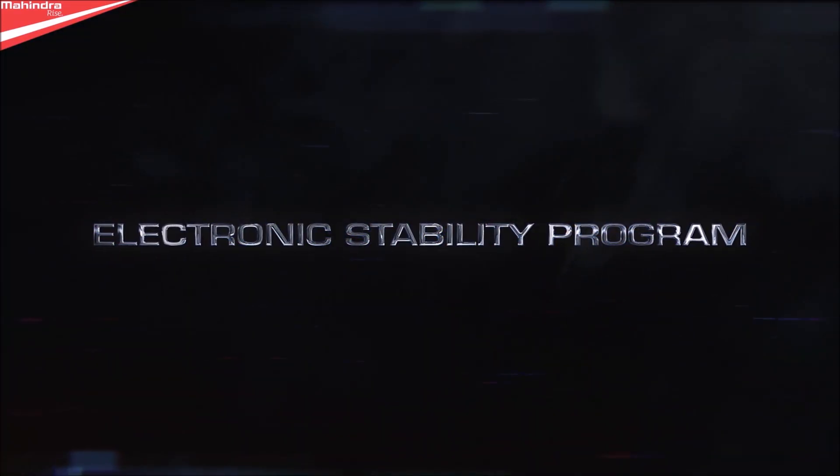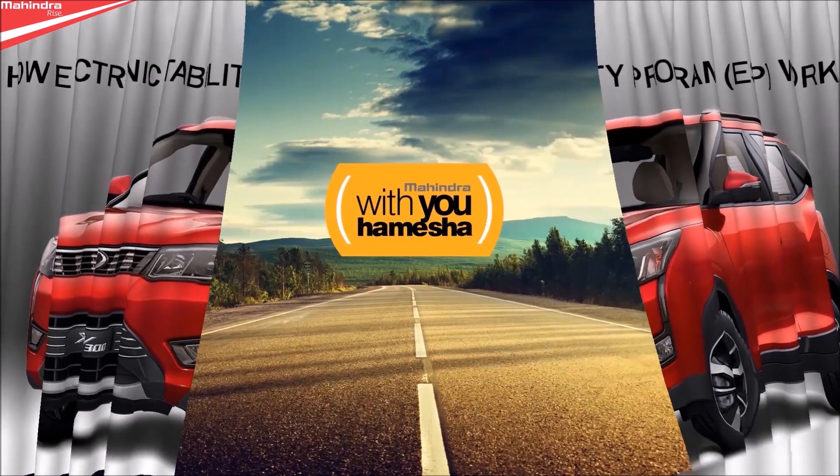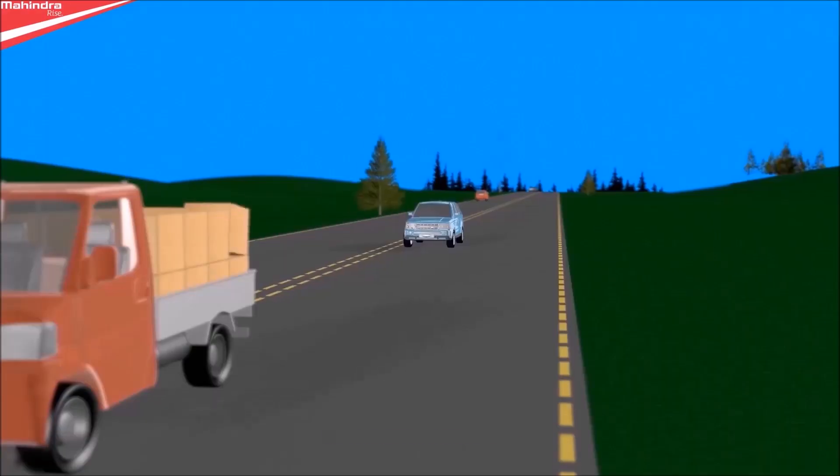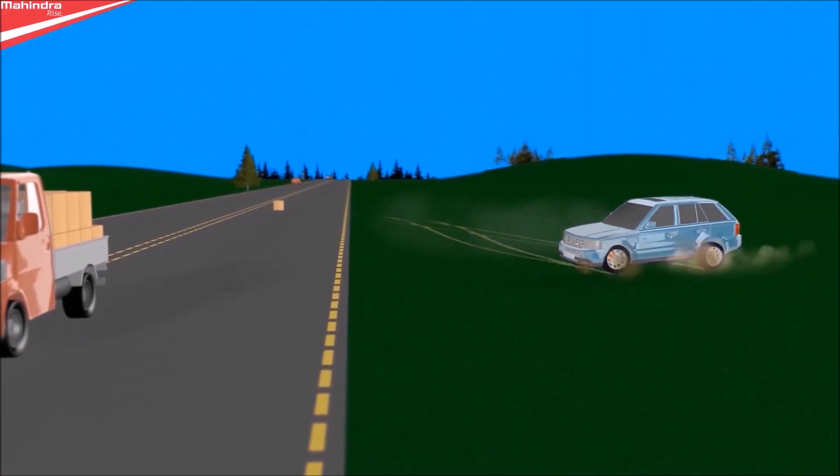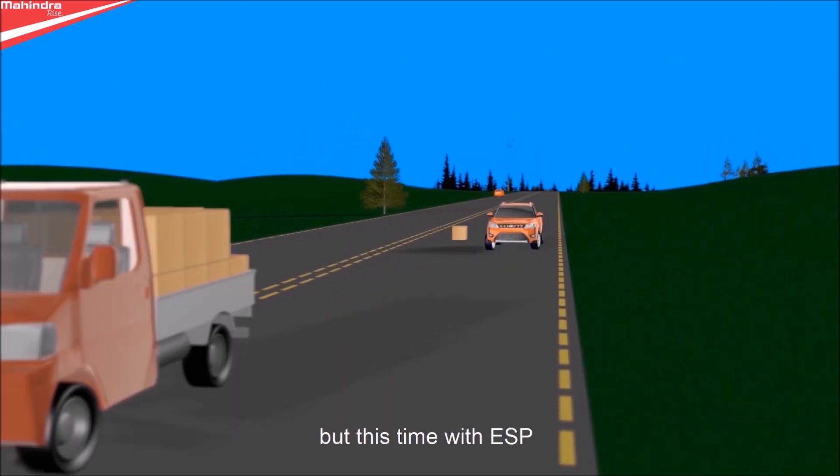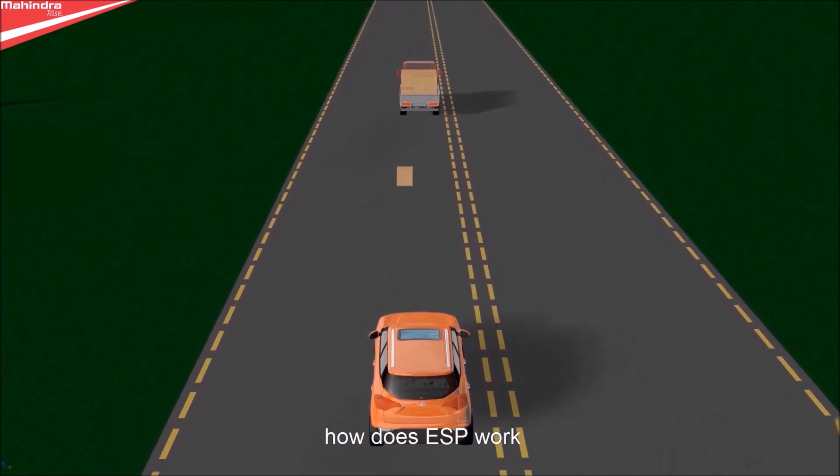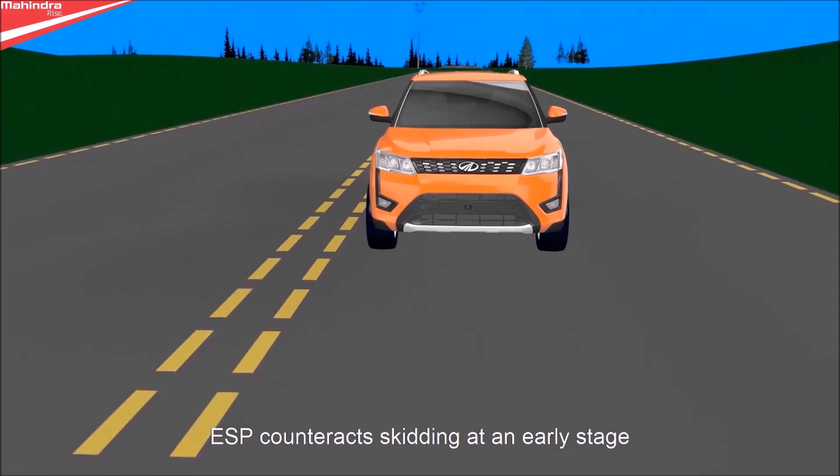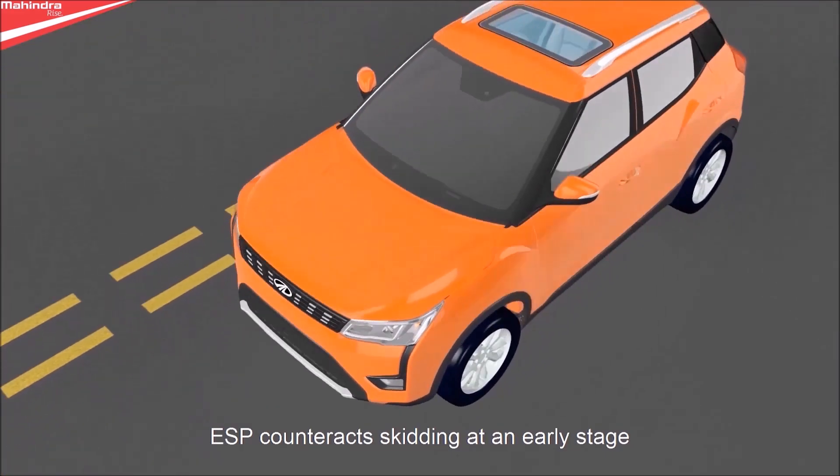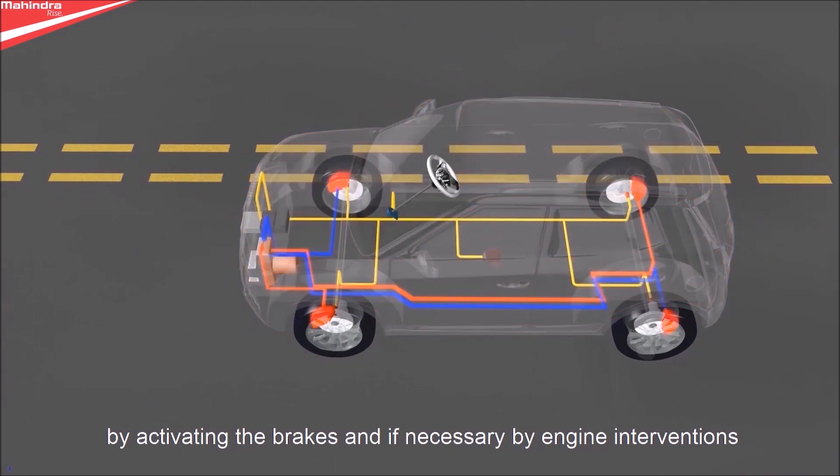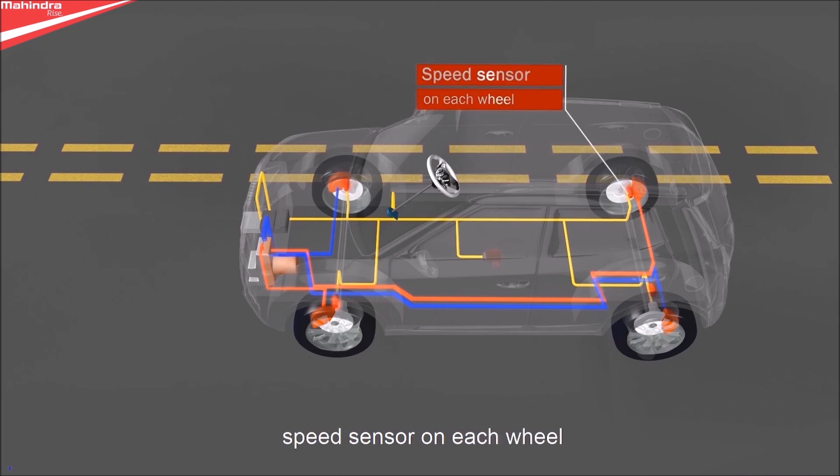Electronic Stability Program (ESP) prevents skidding. How does ESP work? ESP counteracts skidding at an early stage by activating the brakes and, if necessary, by engine interventions.